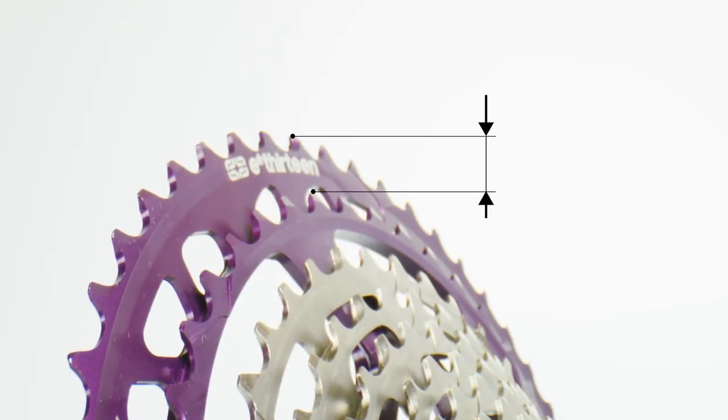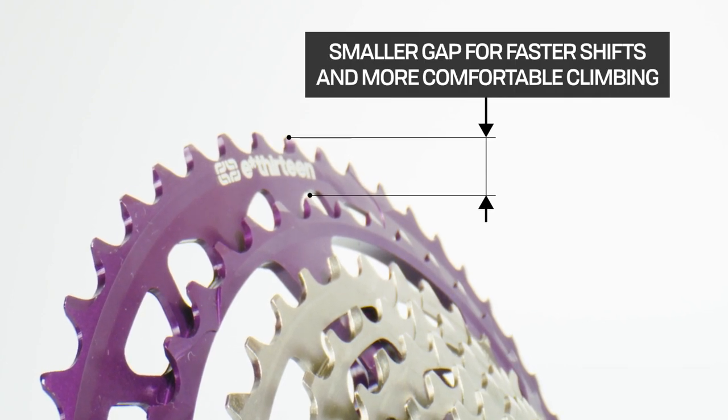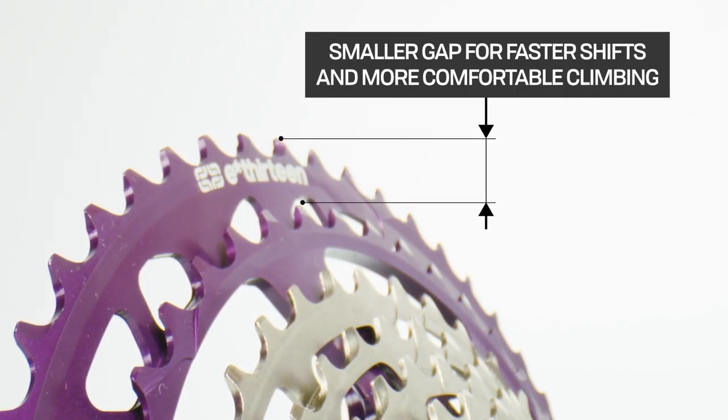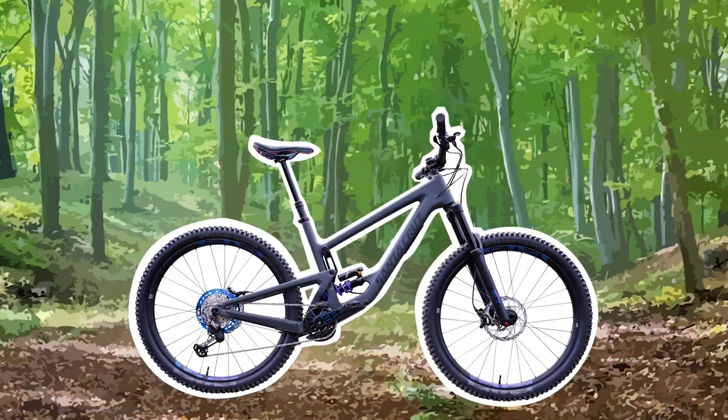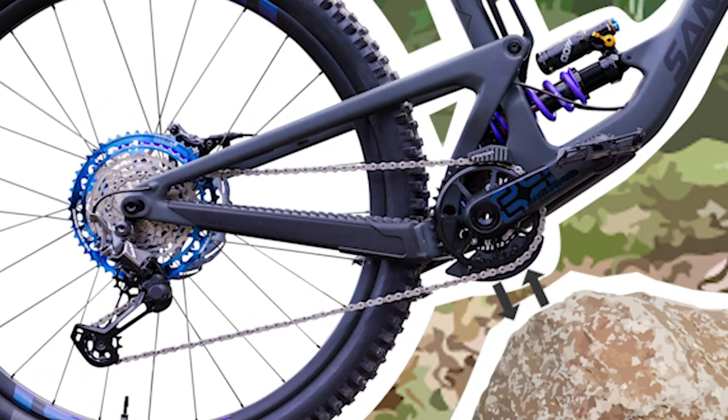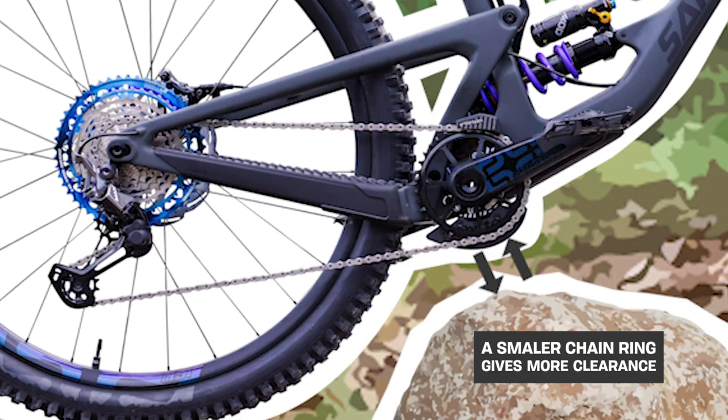A smaller gap between the 42-tooth cog and the 50-tooth granny gear gives you a faster shift than a 42-to-52 for more comfortable climbing. A smaller chainring also provides more ground clearance and uses less chain for an overall lighter drivetrain.